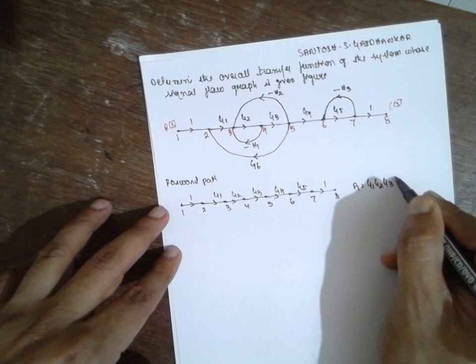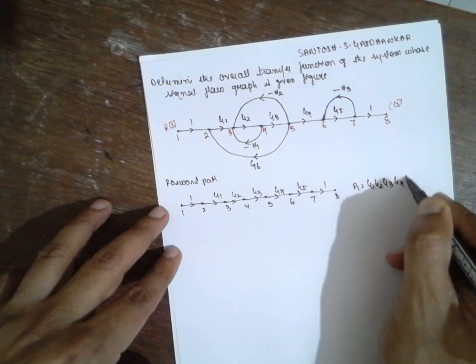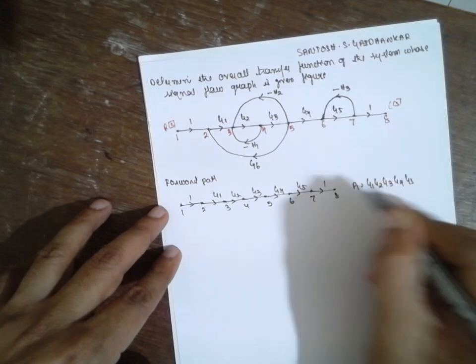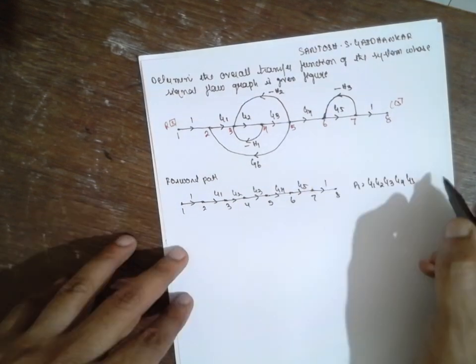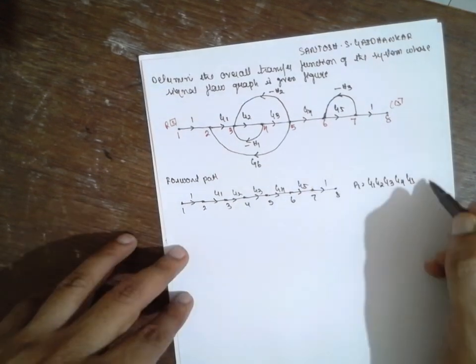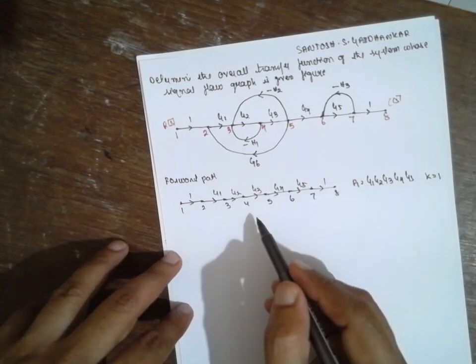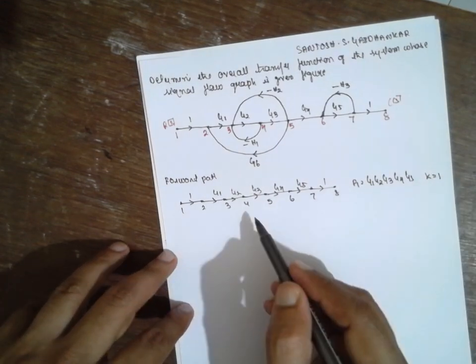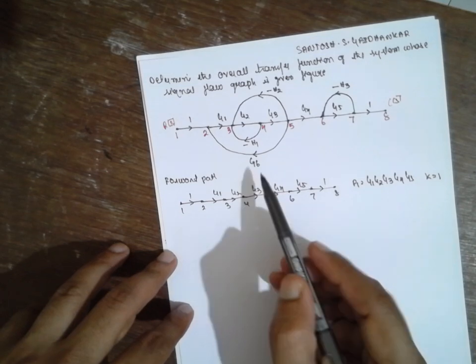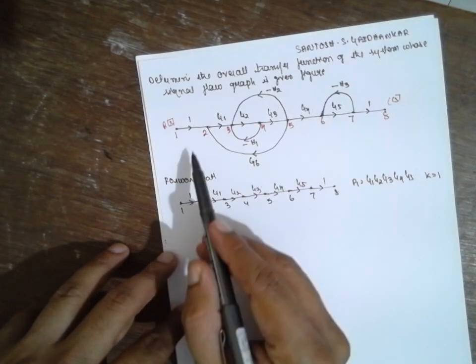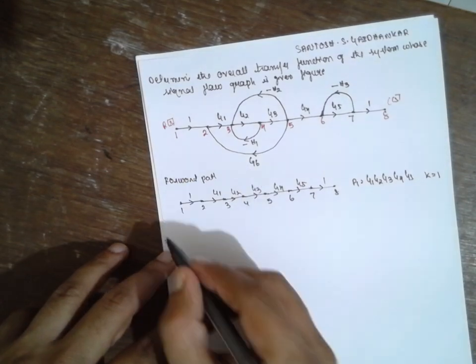Therefore k is equal to only 1 here — there is only one forward path. Next, find out the number of individual loops. We will consider the closed loops; each starts and completes at the same node.